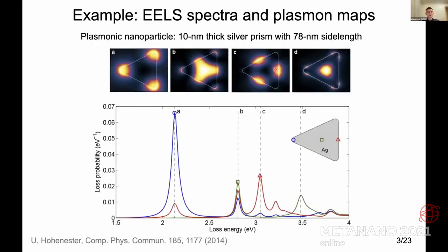This is an example of what an EELS or CL spectrum looks like — here shown for a silver nanoprism. EELS and CL have great spatial and energy resolution, which is why they're used over optical methods. If you shoot electrons at the corner of the prism, you get a plasmon peak at 2.2 electron volts; at the center, you get different peaks. You can visualize plasmon peak positions with spatial resolution below one nanometer, which is not possible with optical methods.